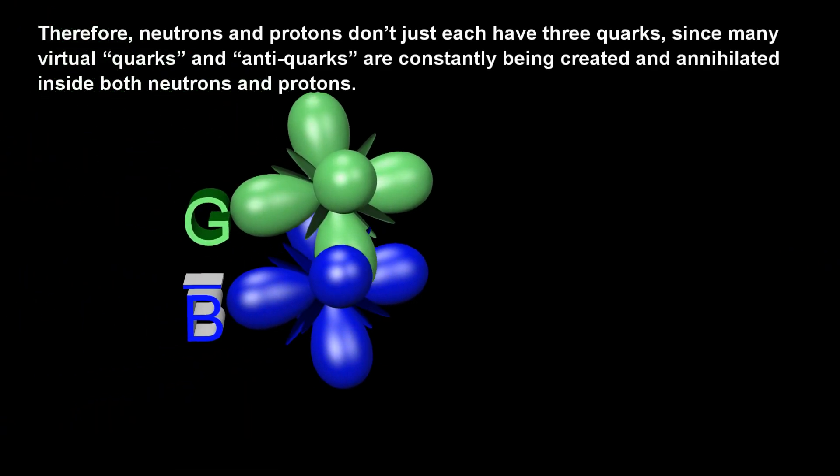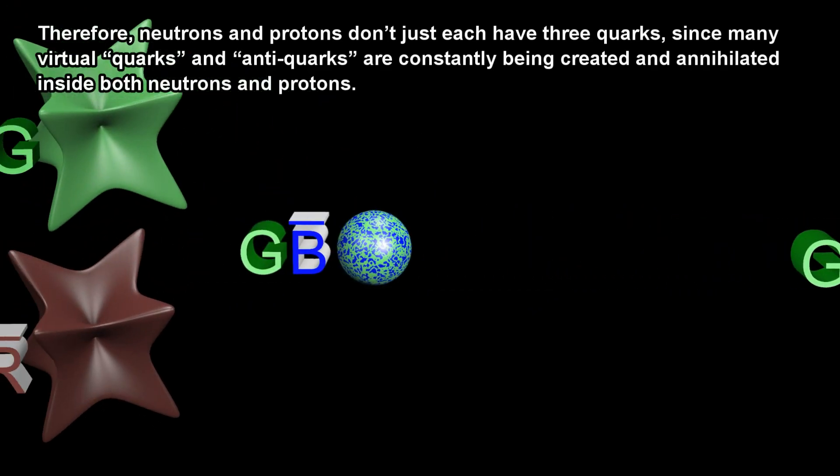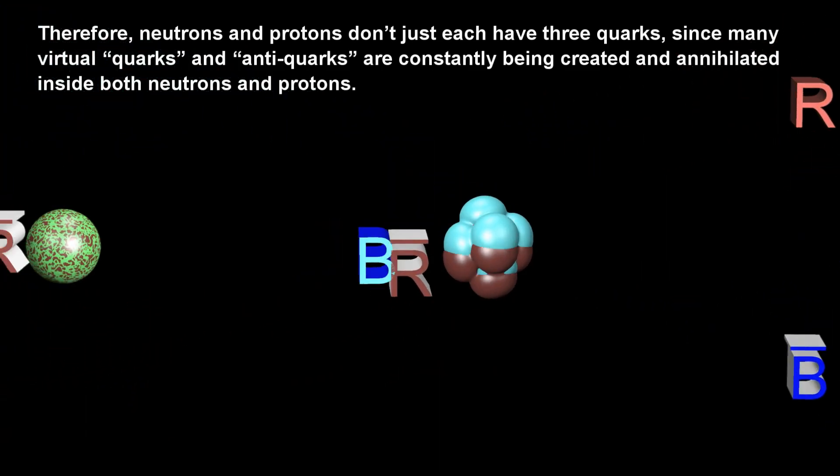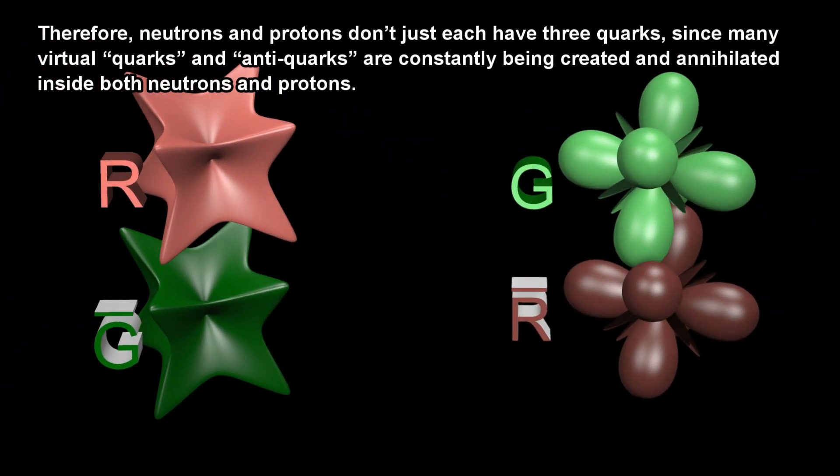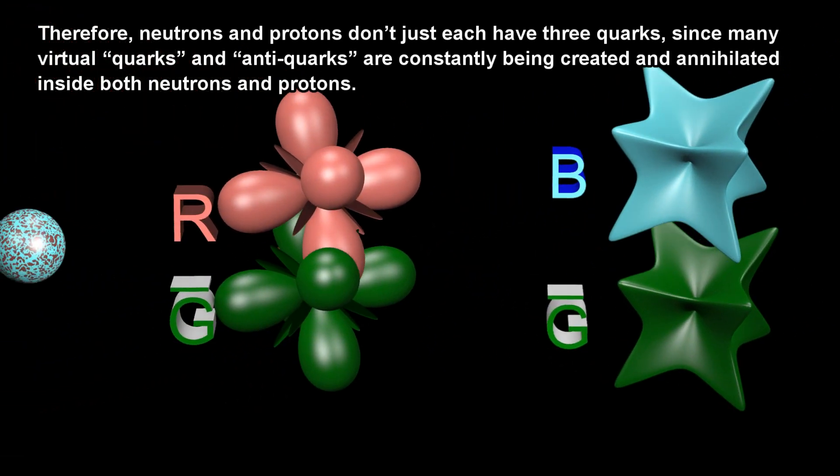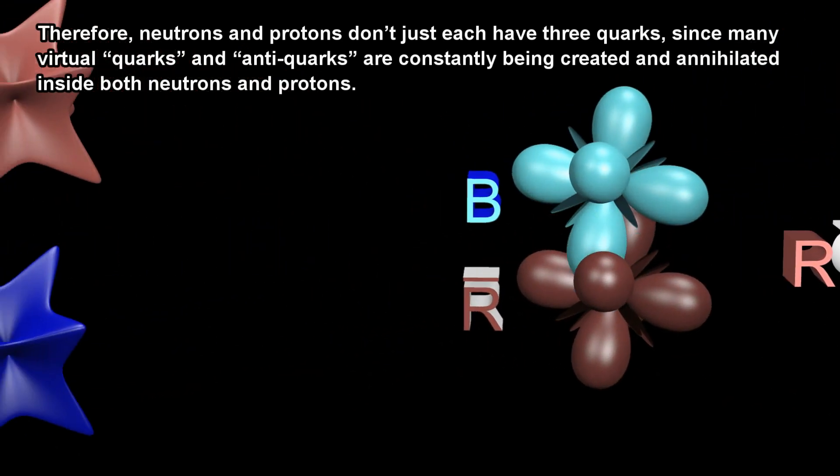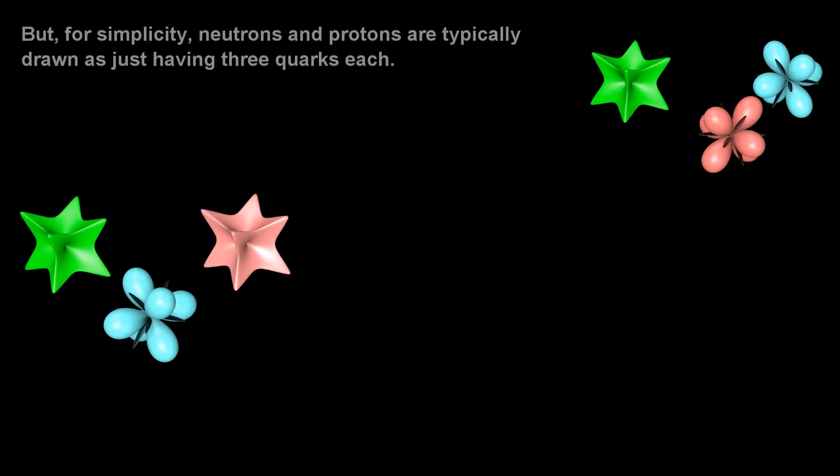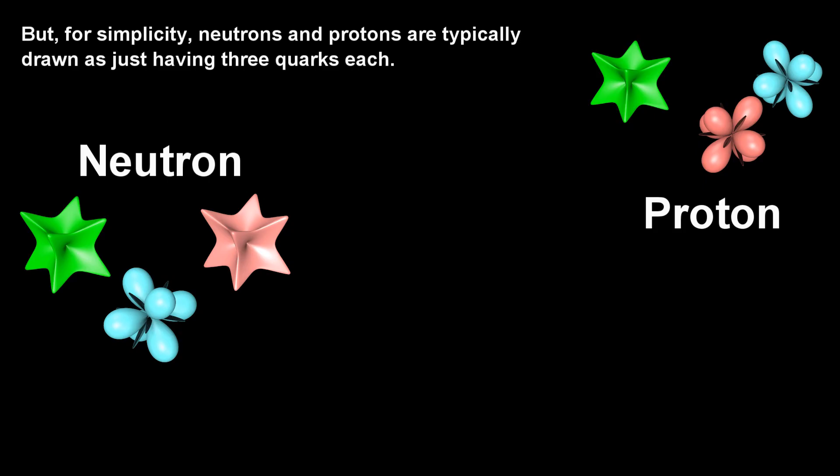Therefore, neutrons and protons don't just each have three quarks, since many virtual quarks and anti-quarks are constantly being created and annihilated inside both neutrons and protons. But for simplicity, neutrons and protons are typically drawn as just having three quarks each.